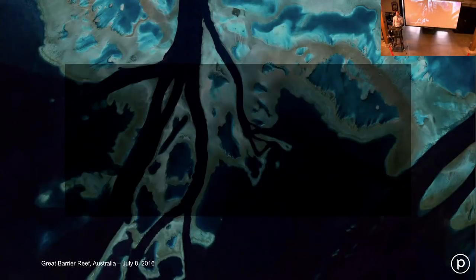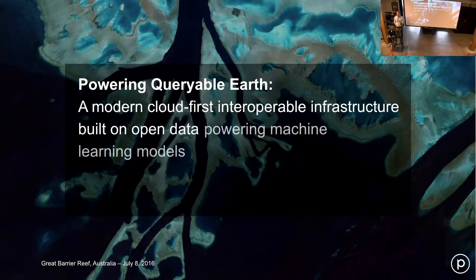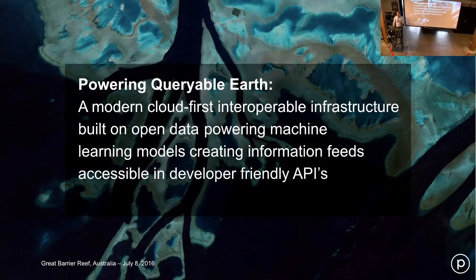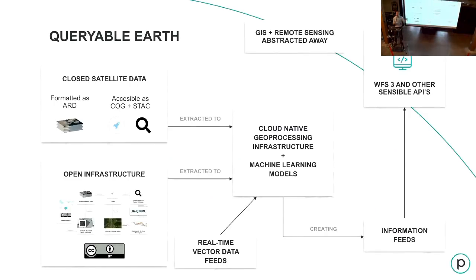I just hit you with a lot of specific parts — I want to tie this back to the overall goal. To power the Queryable Earth, we need advances in a number of directions: continue to work on cloud-native geospatial software, make data more accessible and open, create machine learning models that are open to automatically pull out information from images, put those into APIs that any developer can understand, and work to abstract out GIS and remote sensing. These pieces fit together, with the key added piece of the APIs and abstracting the GIS and remote sensing so that the interface to everyone else can be tapped into by anyone without geospatial expertise.